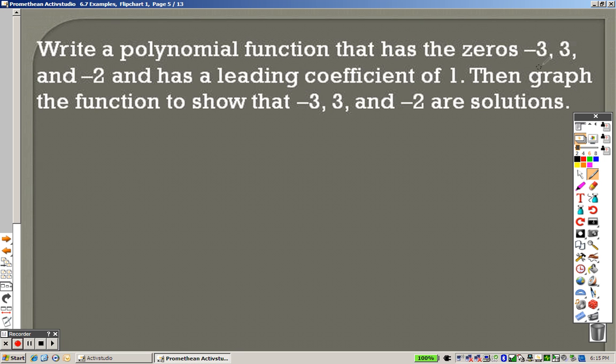Now it's saying right here that you have a negative 3. They're telling you a zero is negative 3, a zero is a positive 3, and a zero is a negative 2. So it says to graph. You can use a graphing calculator to graph. I'm not going to spend my time graphing. I just want to show you how you can do this algebraically.